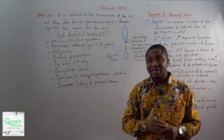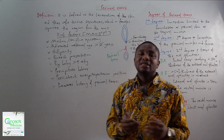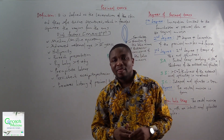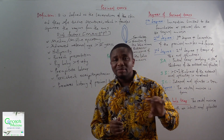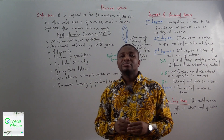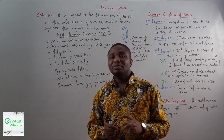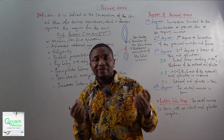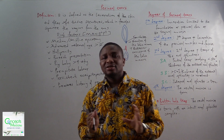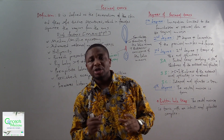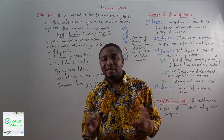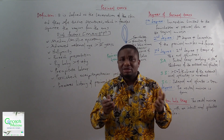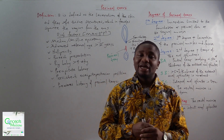The next risk factor is breech presentation, defined as a fetus in longitudinal lie with the buttocks or feet presenting. Then the next one is a big baby — with an estimated fetal weight greater than 4 kilograms. Then precipitate labor, referring to the expulsion of the fetus within three hours of commencement of regular uterine contractions. Because it is happening quickly, it can predispose to a perineal tear.